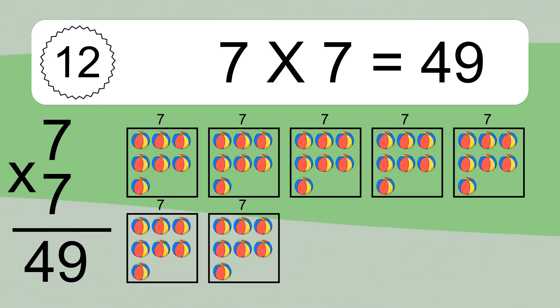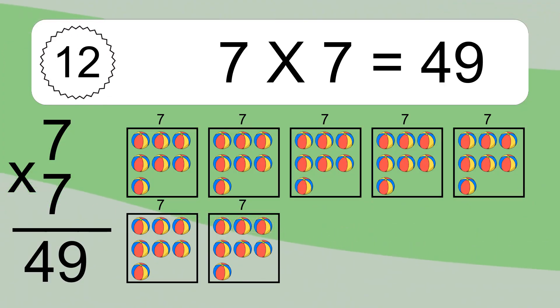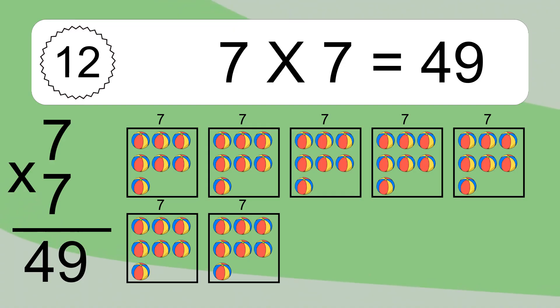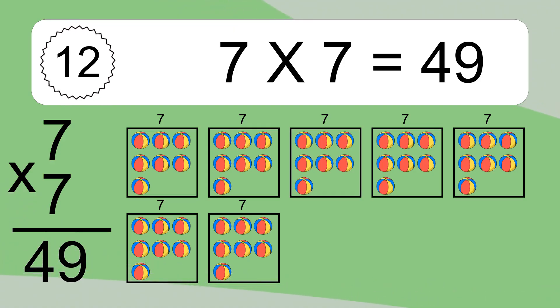We have 7 boxes, and each box has 7 colorful balls inside. If you count all the balls in all the boxes together, you will have 7 times 7 balls. This equals 49 balls.